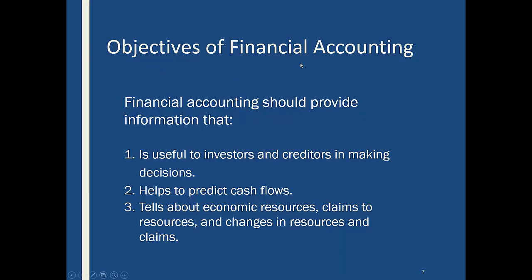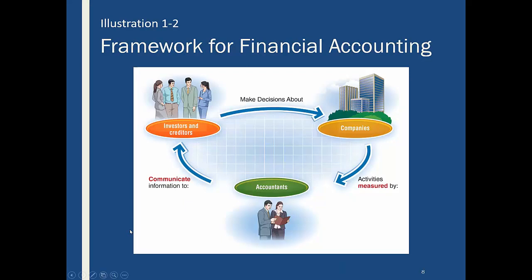We're also going to put together numbers that help predict the cash flows of a company — which is critically important, because if you don't know where your cash is coming from, it's hard to manage your business. The information we compile also tells us about economic resources and claims to those resources. For example, if you have a car loan, the car is the resource and the loan is the claim against that resource. Accountants put this information together and communicate it to investors and creditors, who then make decisions about the company.